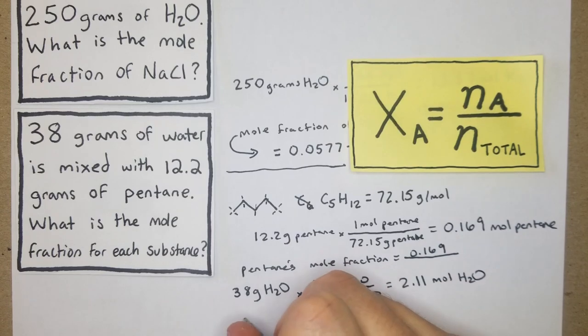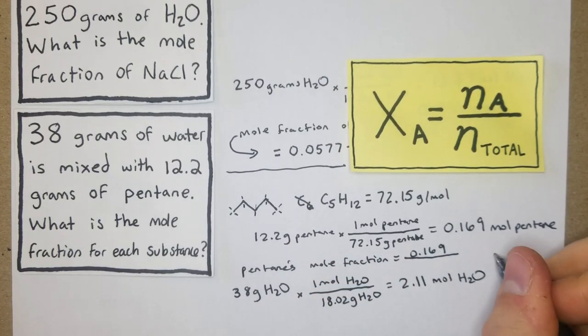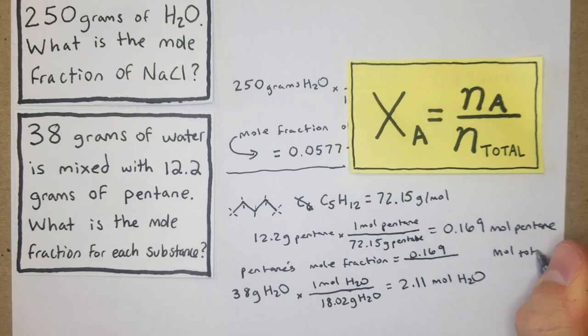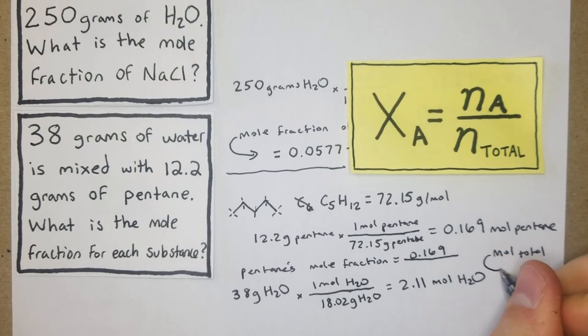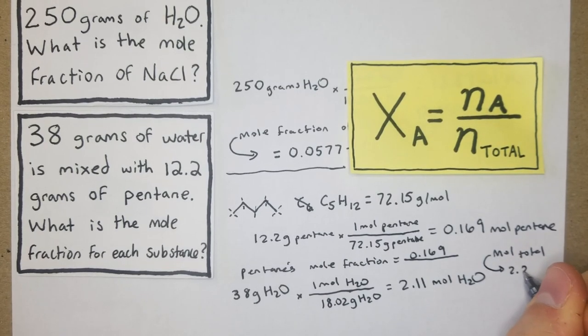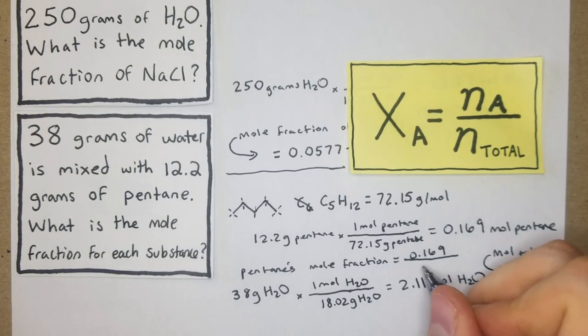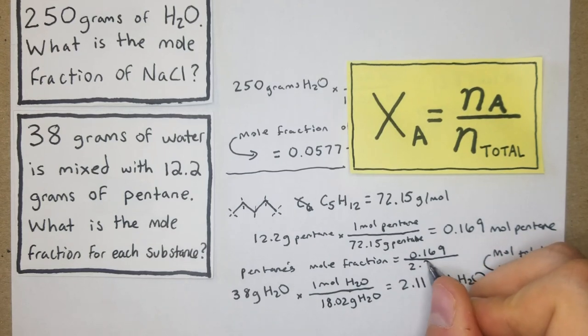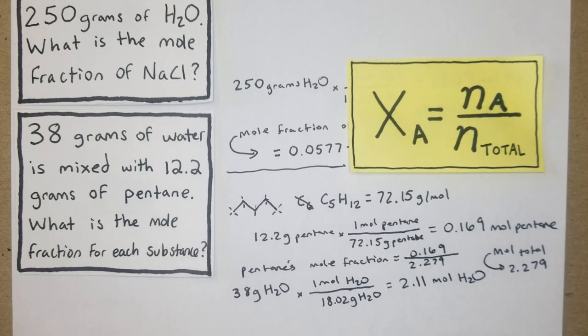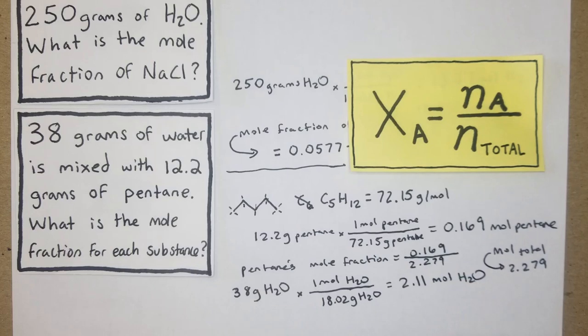Our total is going to be 2.279. So that is the bottom number for each of these, and we'll put that right into here: 2.279.